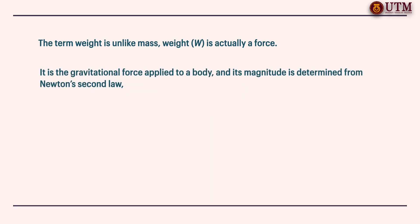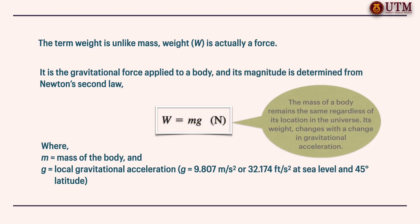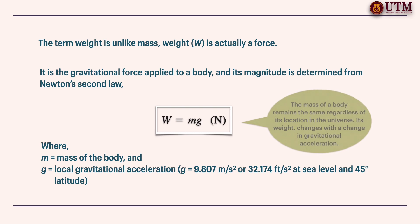The term weight is unlike mass. Weight is actually a force. It is the gravitational force applied to a body and its magnitude is determined from Newton's second law. Where M is the mass of the body and G is the local gravitational acceleration. We usually take G as 9.807 meter per square second or 32.174 foot per square second at sea level and 45 degree latitude. The mass of a body remains the same regardless of its location in the universe. Its weight, however, changes with a change in gravitational acceleration.